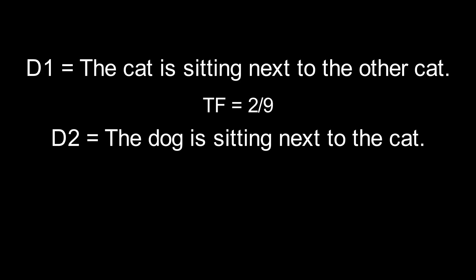If Document 2 is the sentence, the dog is sitting next to the cat, then there are eight total words. The word cat appears one time, so the term frequency of cat in Document 2 is 1 over 8.